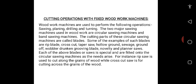The two major sawing machines used in woodwork are circular sawing machines and band sawing machines. The cutting parts of these circular sawing machines are called blades. Some examples of such blades include rip blade, crosscut, tapper saw, hollow ground, sewage, ground off, warbler drunken grooving blades, novelty, and planar saws.